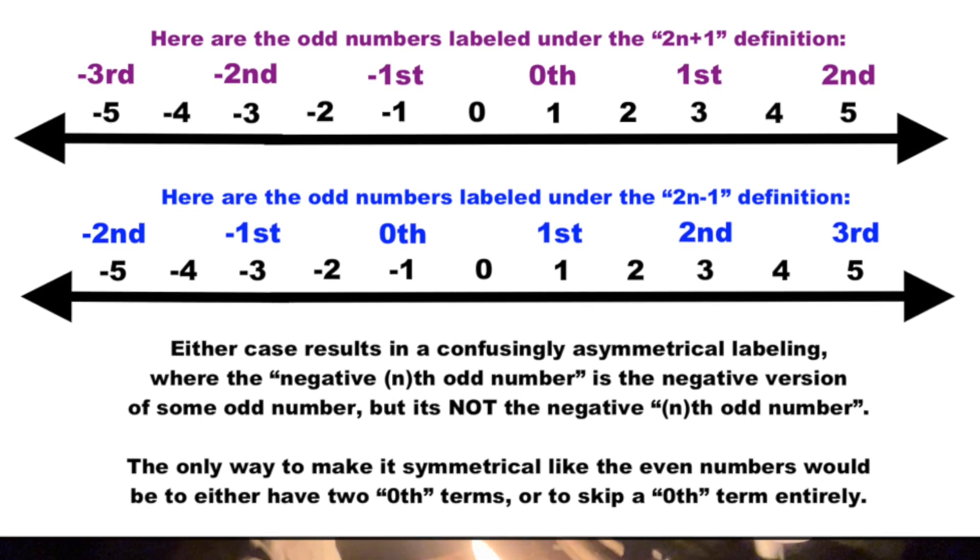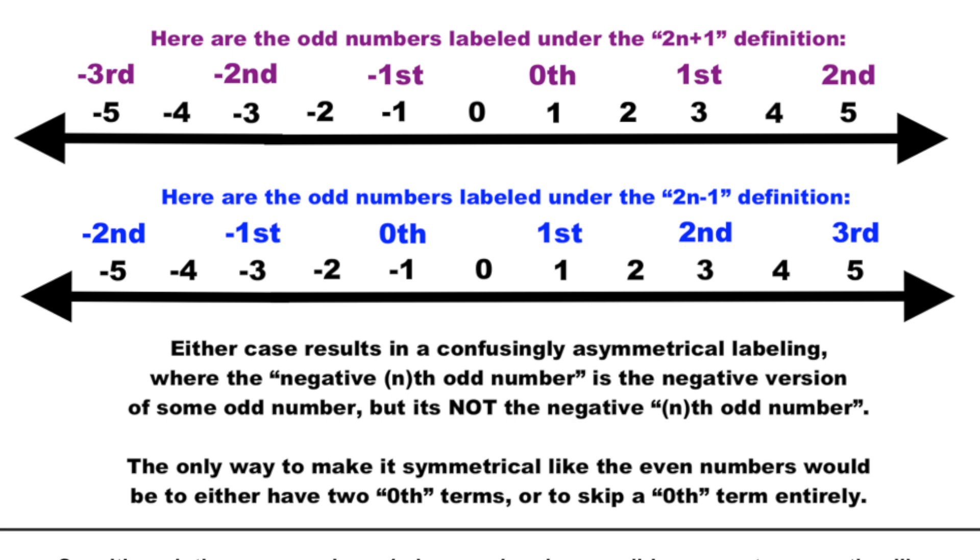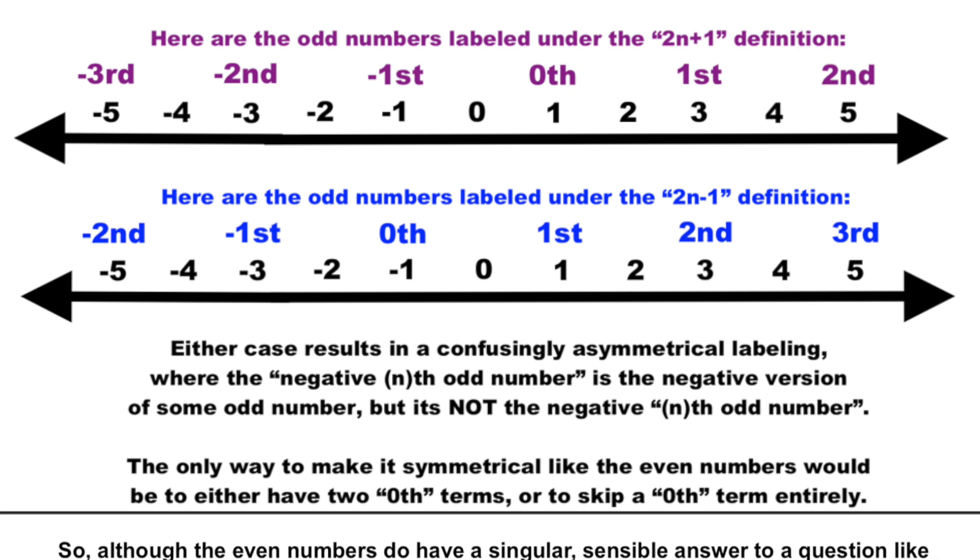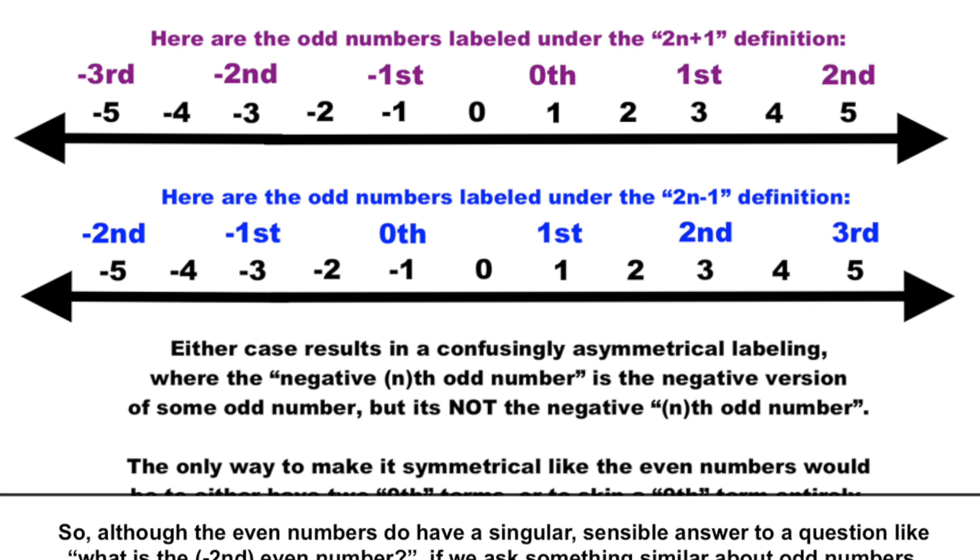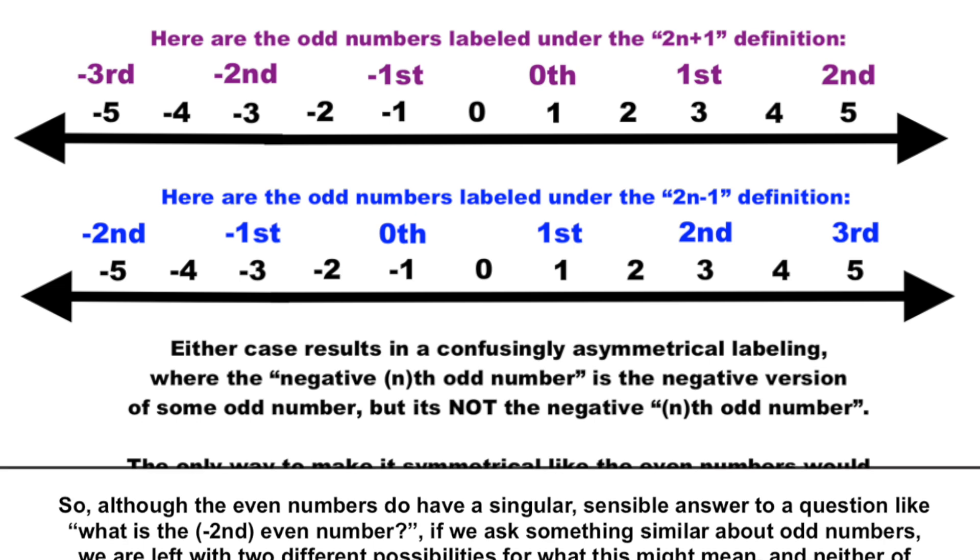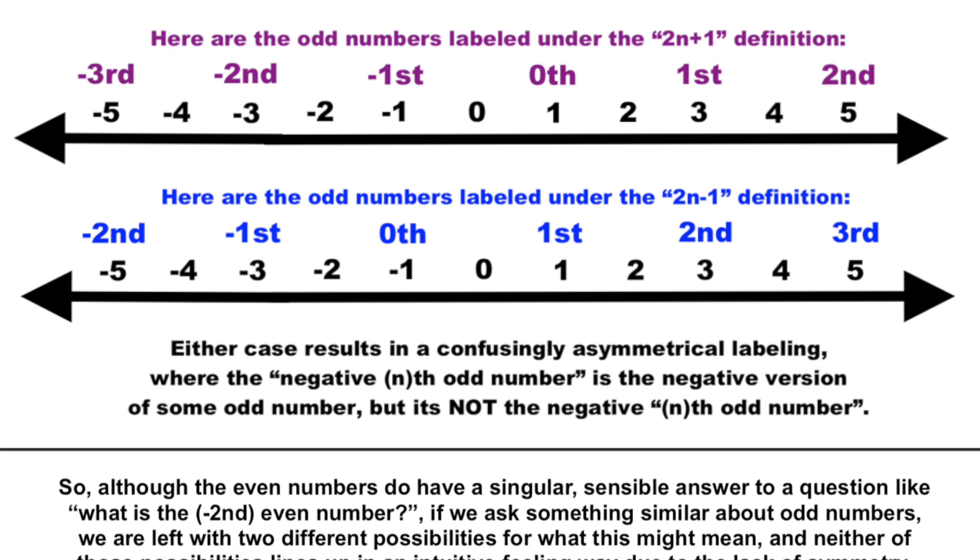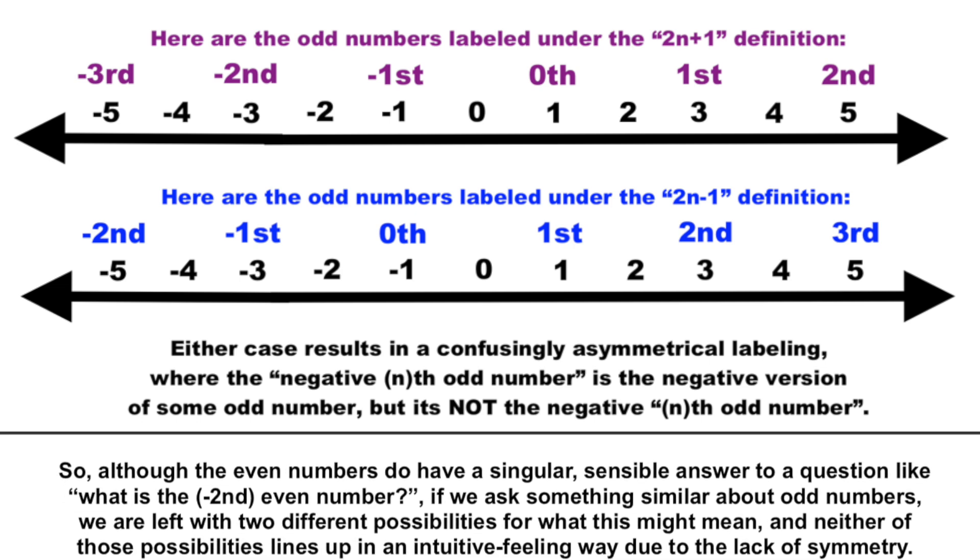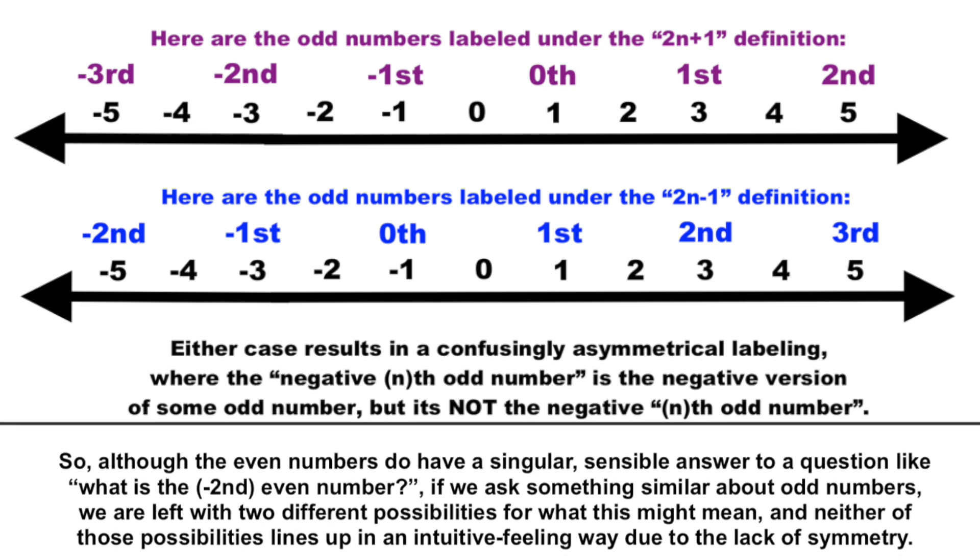And so with the odd numbers, unfortunately, the way that they are symmetrical around what we could consider the center of the real number line, the number zero, is symmetrical itself, but can't be labeled in a symmetrical feeling way.